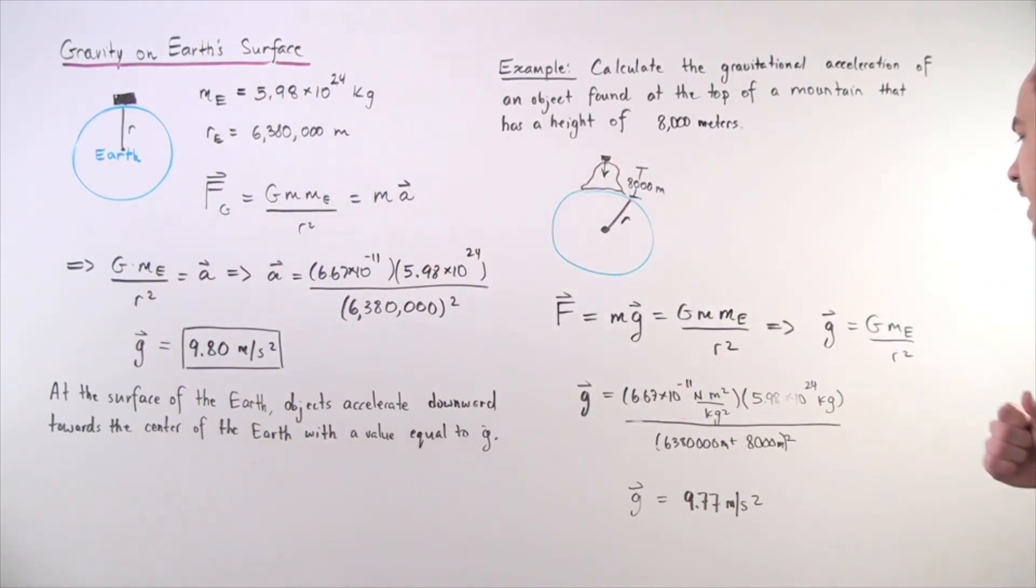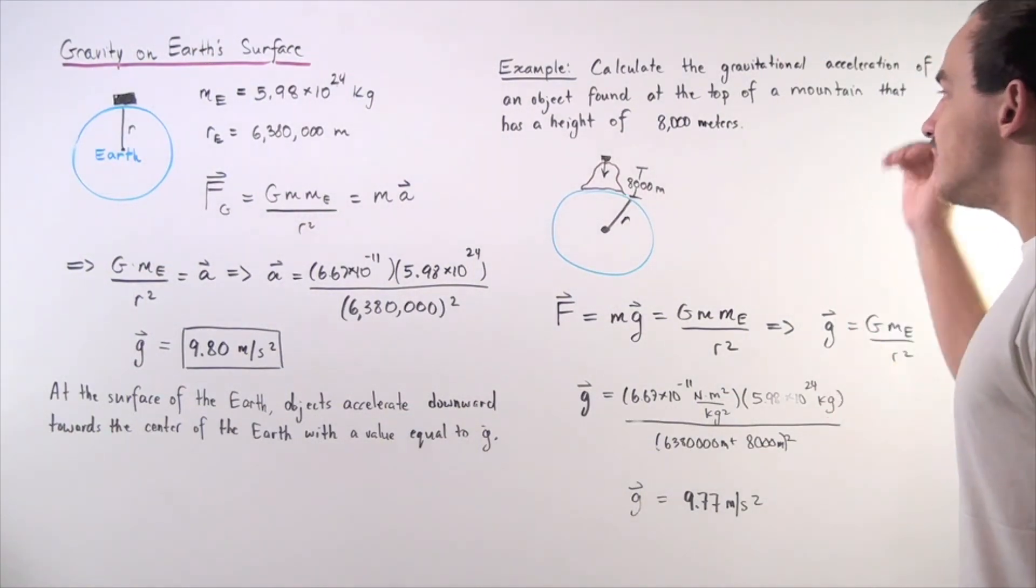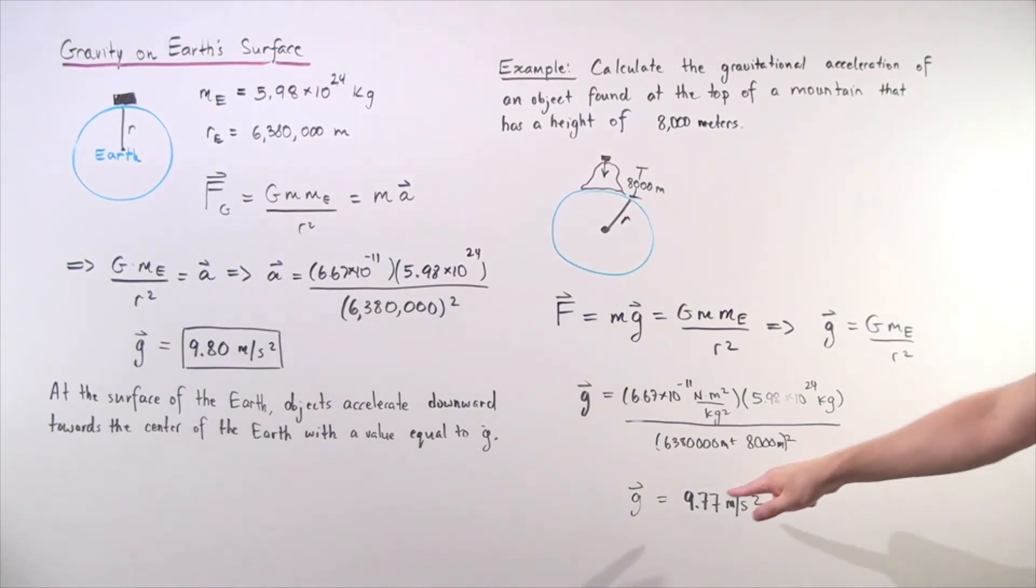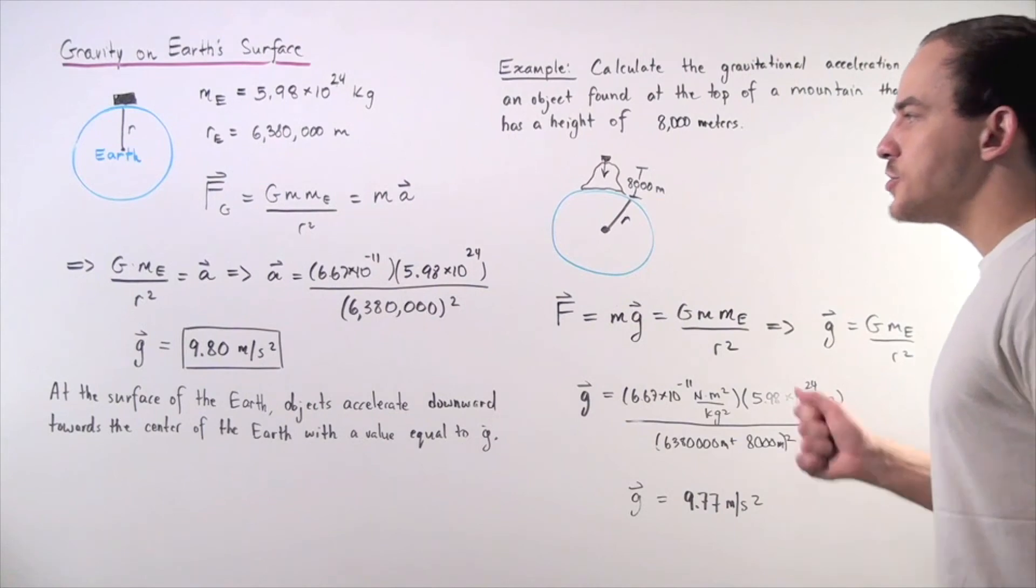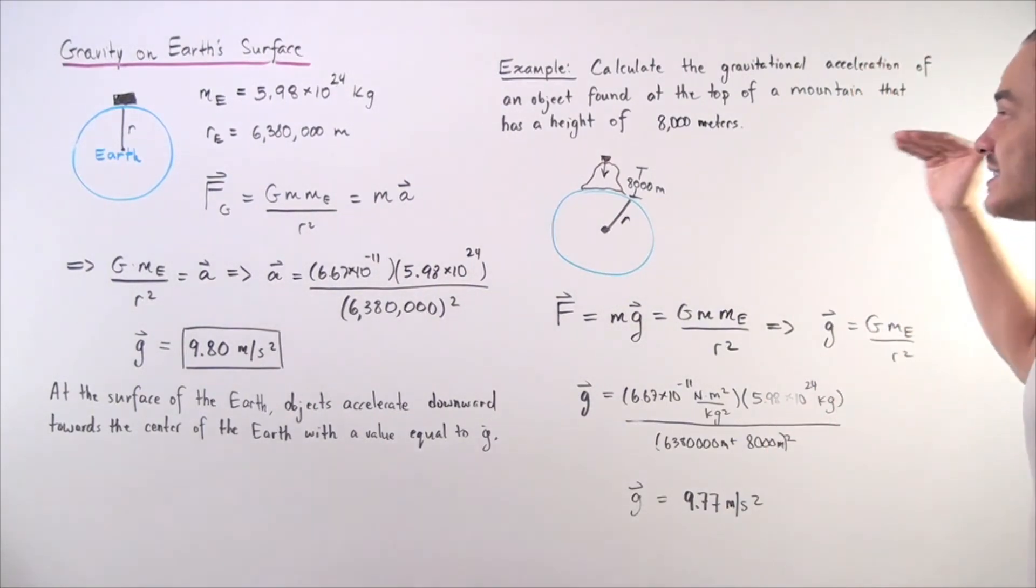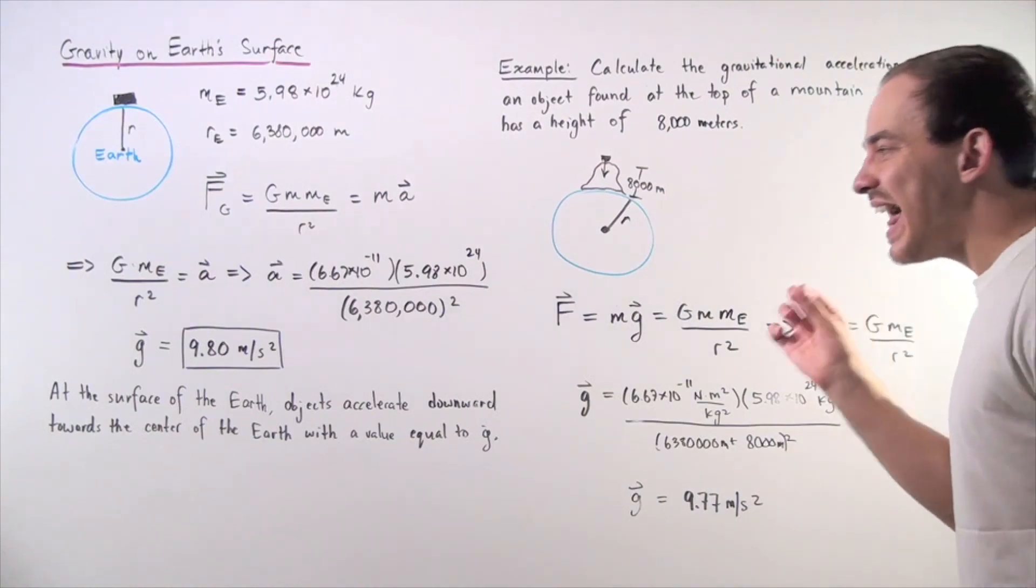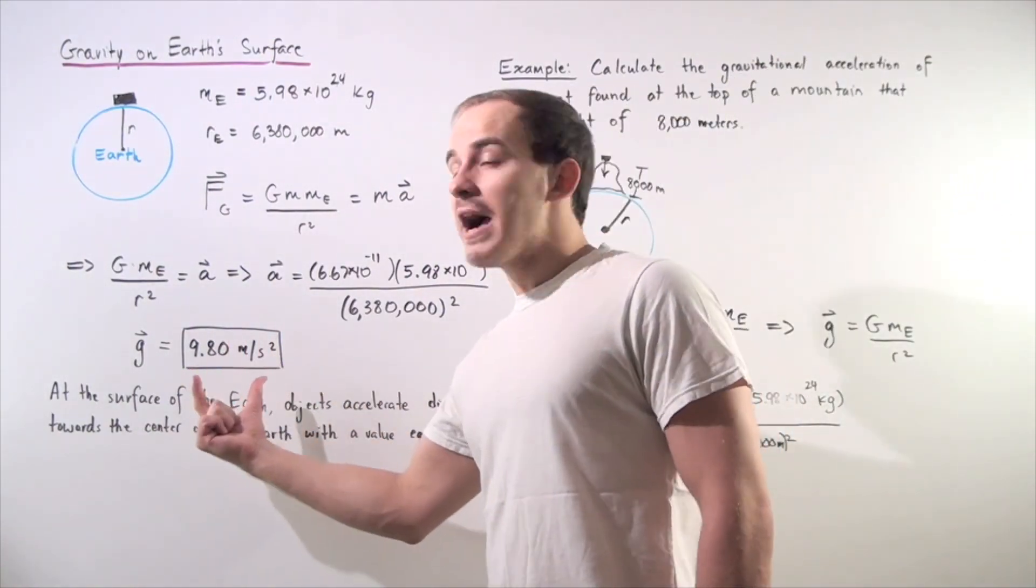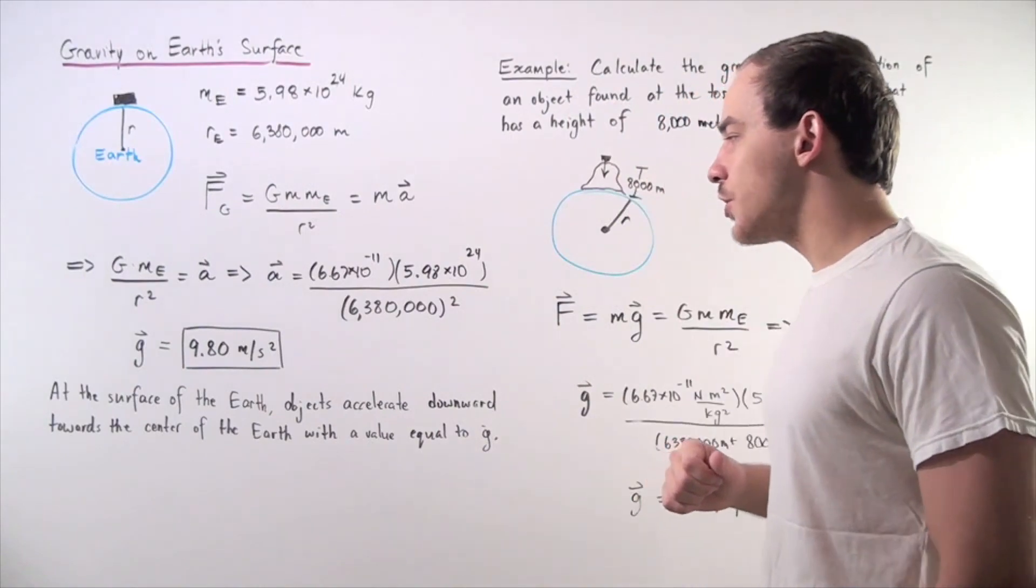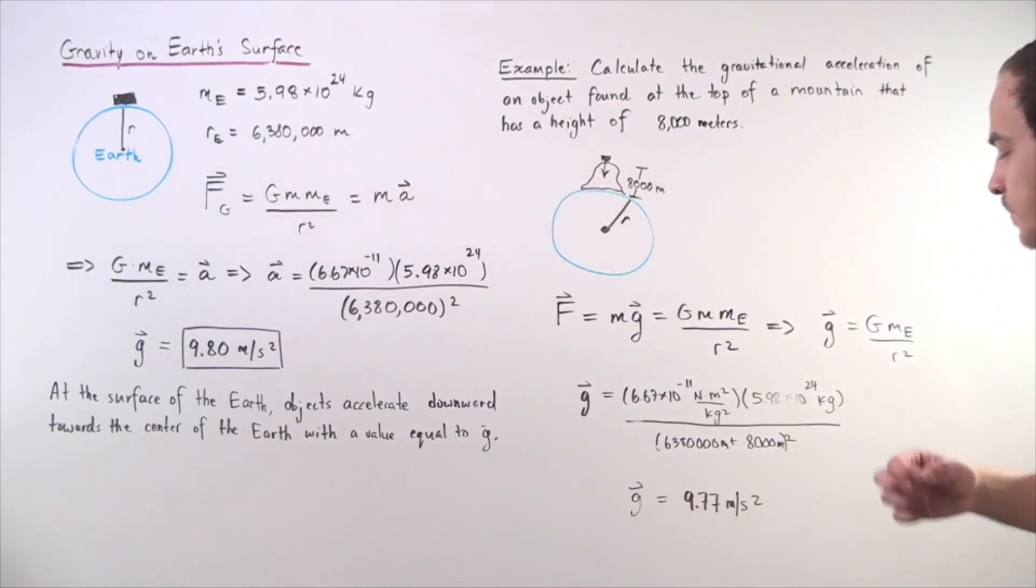So, we plug in our values, and we find that our gravitational constant, g, on the top of the mountain, is approximately equal to 9.77 meters per second squared. So, on top of the mountain, the gravitational acceleration is slightly less than this value found on the surface of the Earth. So, it's approximately 0.3 percent less.